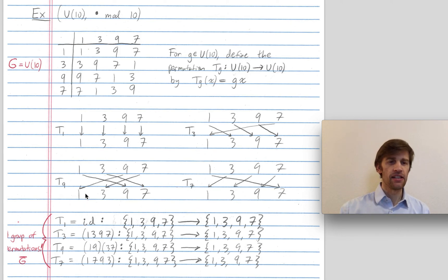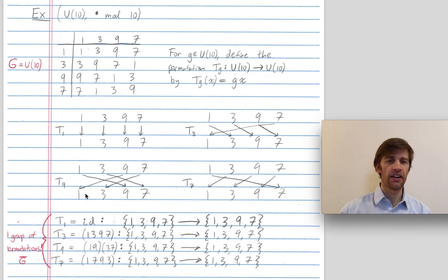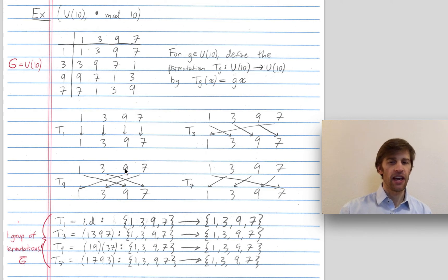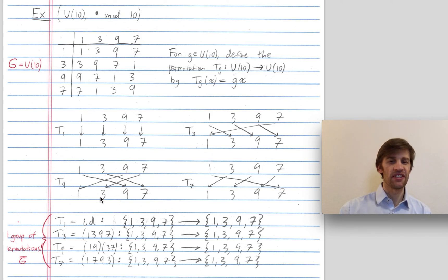T9 is a permutation. It acts by multiplying by 9. So 1 maps to 9. 3 maps to 3 times 9, which is 27, or 7 mod 10. 9 maps to 9 times 9, or 81, or 1 mod 10. 7 maps to 7 times 9, or 63, which is 3 mod 10.